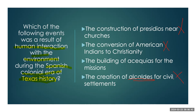The creation of alcades for civil settlements only hits on the human interaction side, not the environment side of the equation. The building of acequias for the missions — acequias were ditches that were dug to direct the water flow towards the missions. This is where we are directly digging ditches so that we have more water coming into the missions, checking off both sides: it is us interacting with the environment. So that's going to make this one our correct answer.